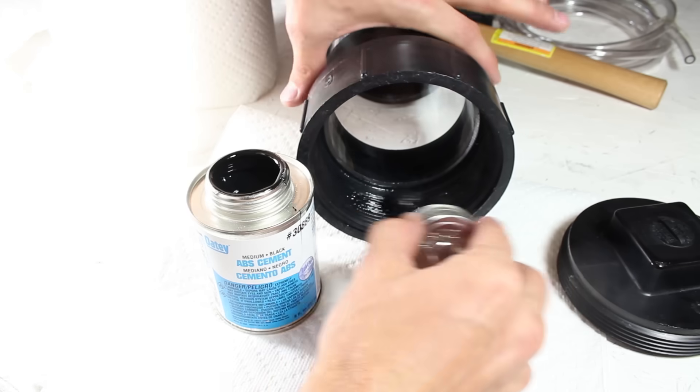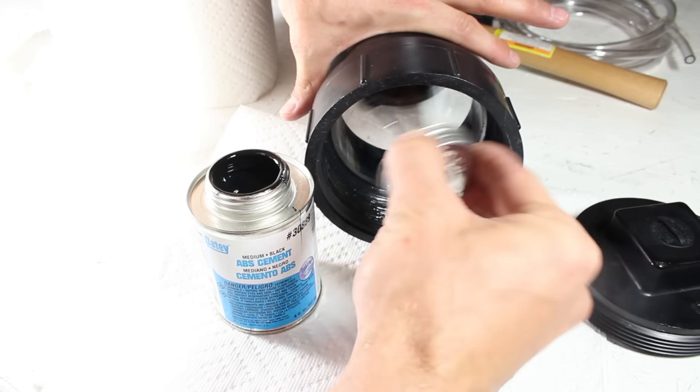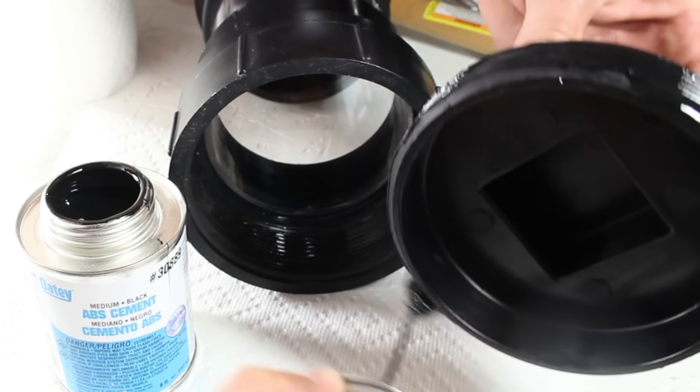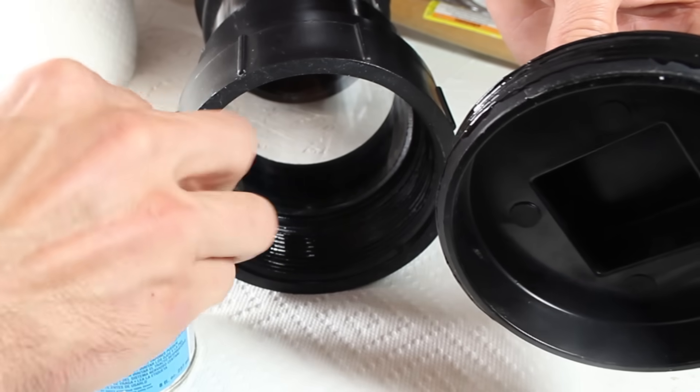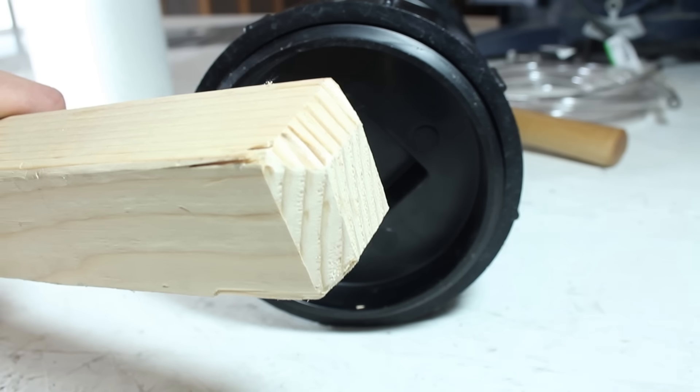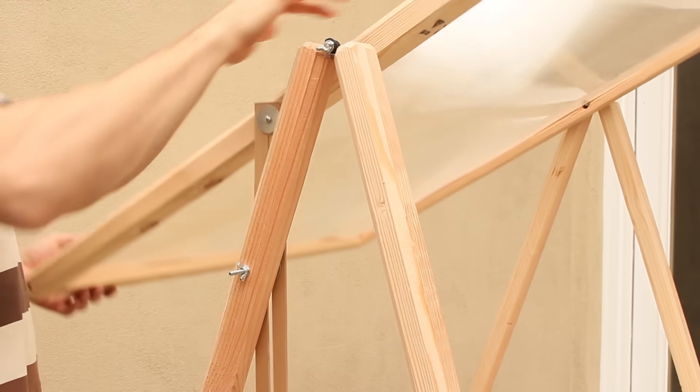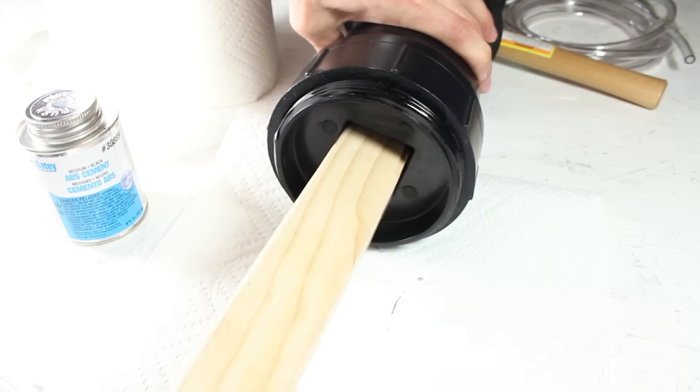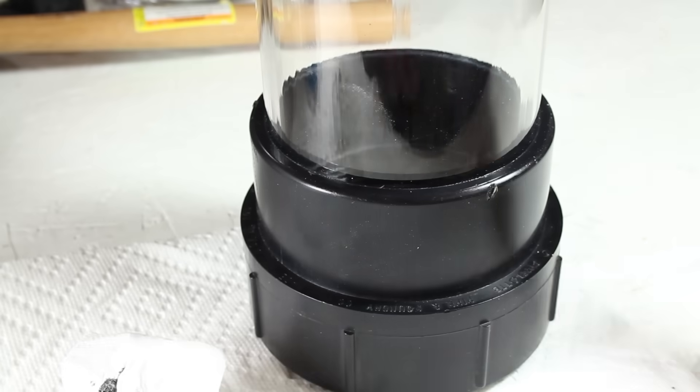I'm going to seal the bottom with a 4 inch ABS clean out plug and some ABS cement. The gooey black cement is applied to the threads of both parts, then I'll use this piece of scrap wood from my solar scorcher frame project to help screw it in tight. The excess is removed, and we can let it sit here to cure.